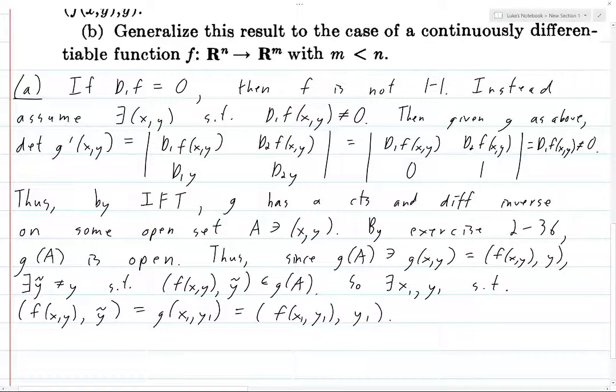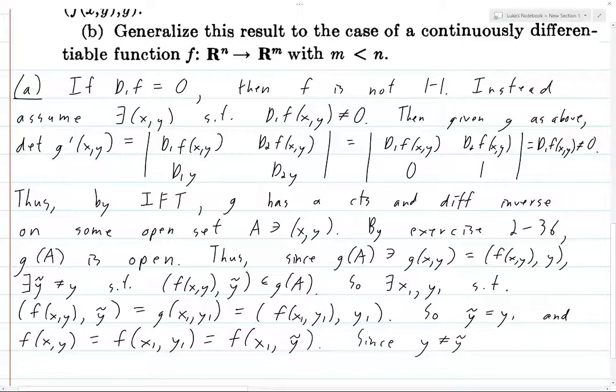Okay, so these two vectors are equal, so each individual coordinate is equal. So in particular, we first have ỹ equals y₁, and then we have f(x,y) is equal to f(x₁, y₁), which is equal to f(x₁, ỹ). But y is not equal to ỹ, and so the points (x,y) and (x₁, ỹ) cannot be equal. It is possible that x equals x₁, but it cannot be possible that y equals ỹ. So since y is not equal to ỹ, we have two distinct points which map to the same point under f, and so f is not one-to-one.